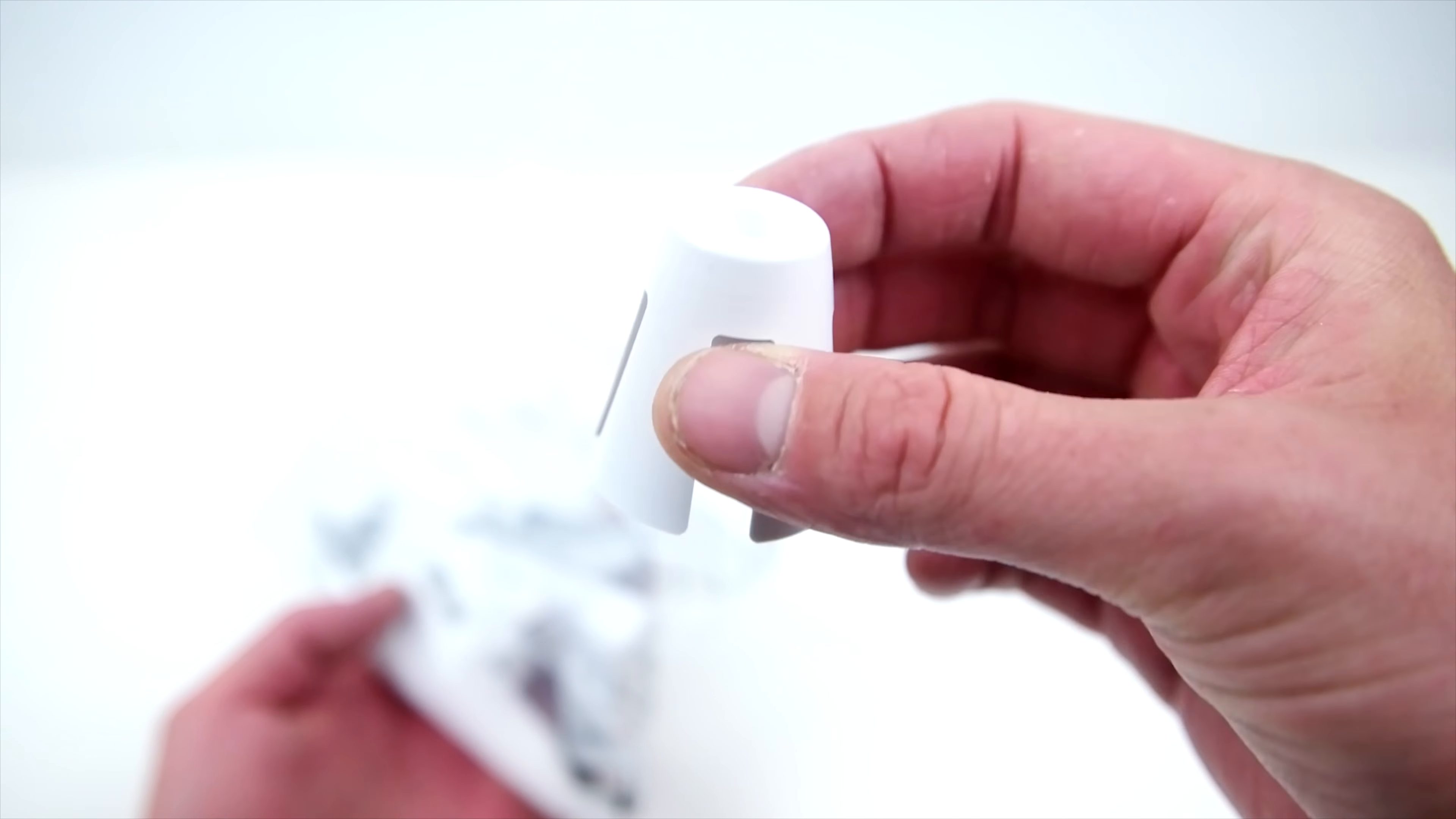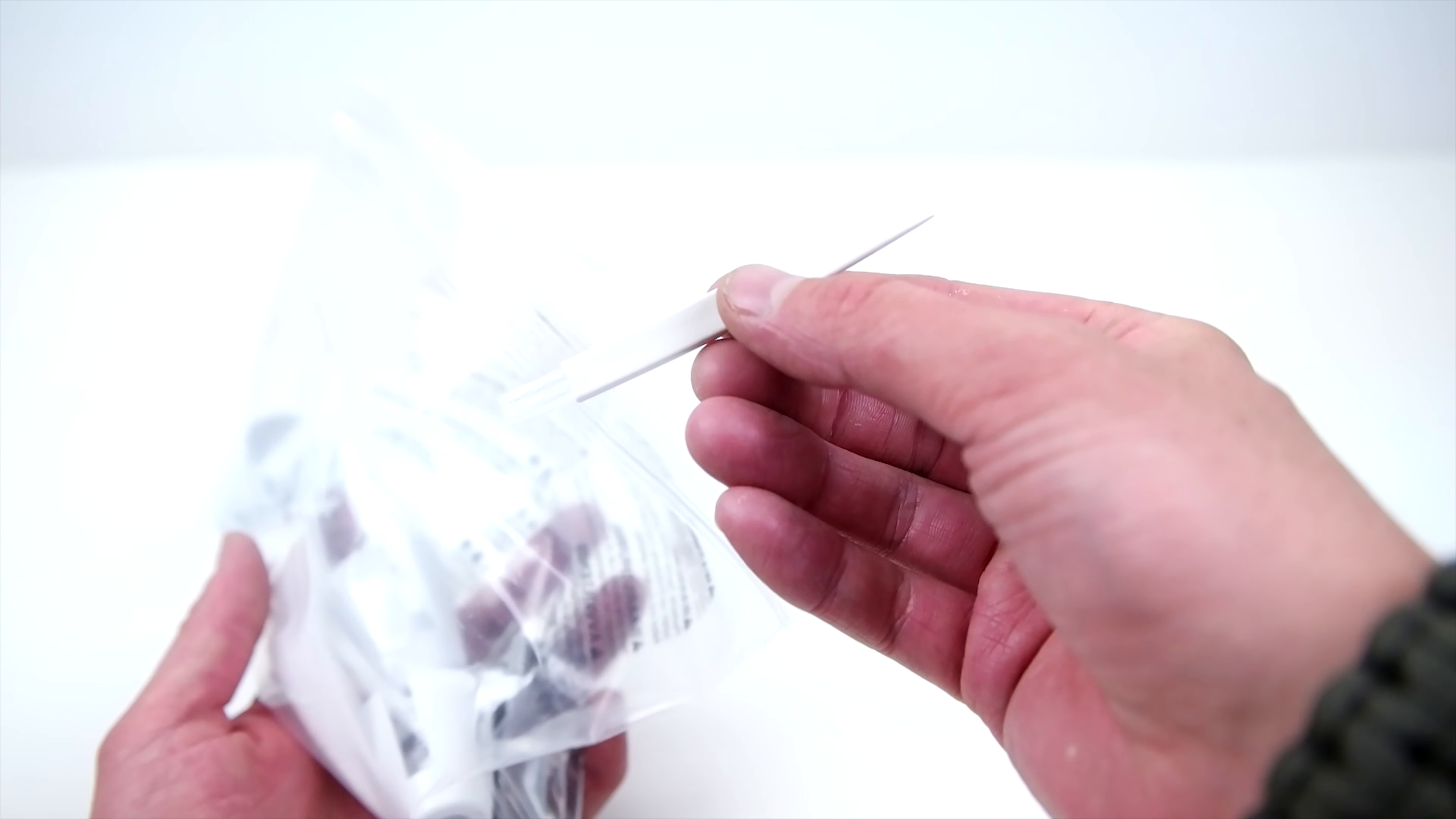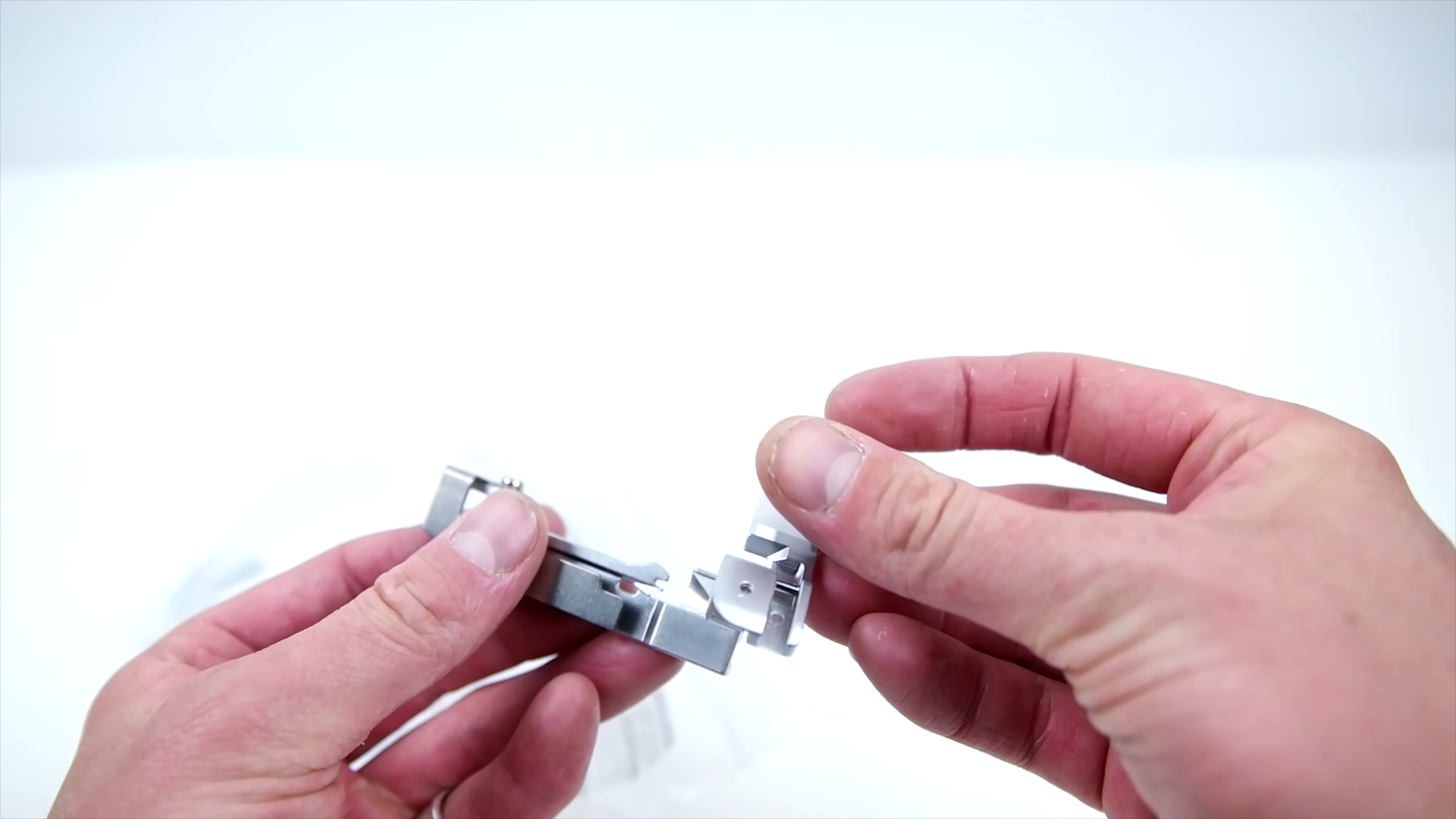Also included are a cleaning brush, thread nets, two bonus presser feet (a blind stitch foot and a gathering foot), and a small allen wrench. Here's how to install the trim trap - super easy, it just slides right in and pops into place.